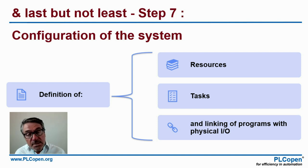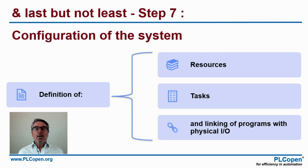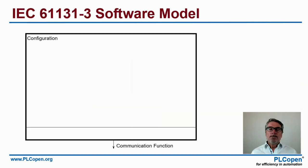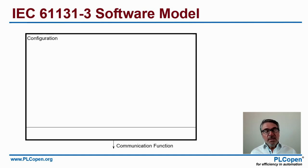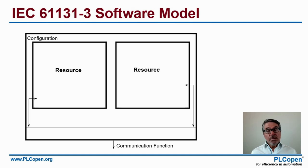Last but not least, step seven: the configuration of the system — defining the resources, the tasks, and linking the program to the physical I/O. Let's first look at the software model. The configuration is what we need in total to fulfill all requirements for this control part.